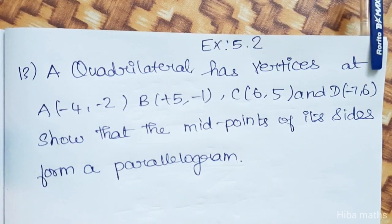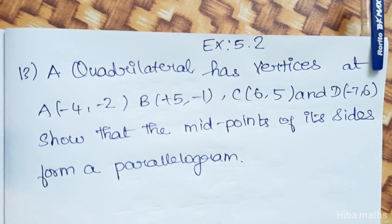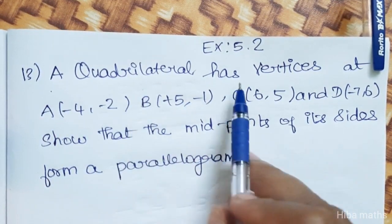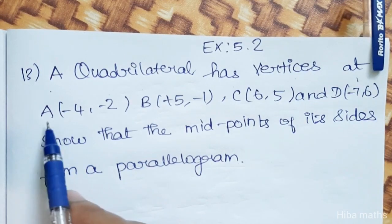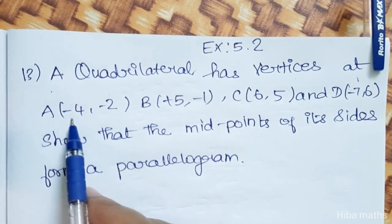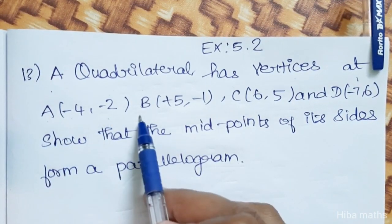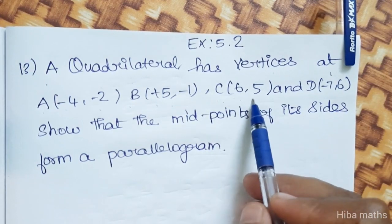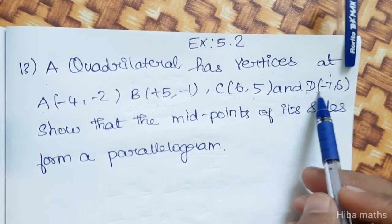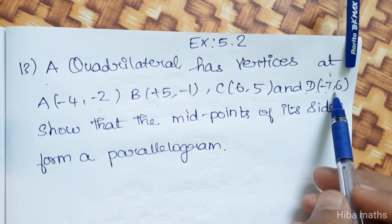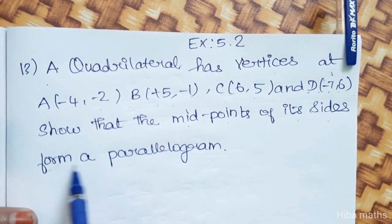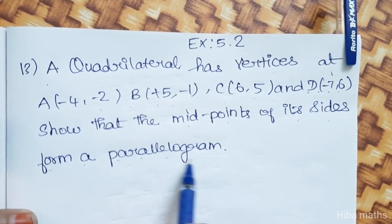Hello students, welcome to Hiba Max. 10th standard, exercise 5.2, 13th question. A quadrilateral has vertices at A is minus 4, minus 2; B is 5, minus 1; C is 6, 5; and D is minus 7, 6. Show that the midpoints of its sides form a parallelogram.